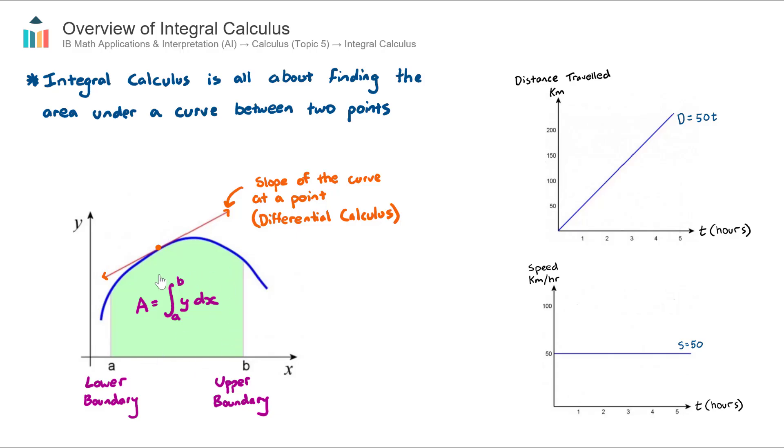So for example this green shaded region here is the area bounded by the curve and the X axis between points A and B. And we call the left-hand point the lower boundary and the right-hand point the upper boundary.